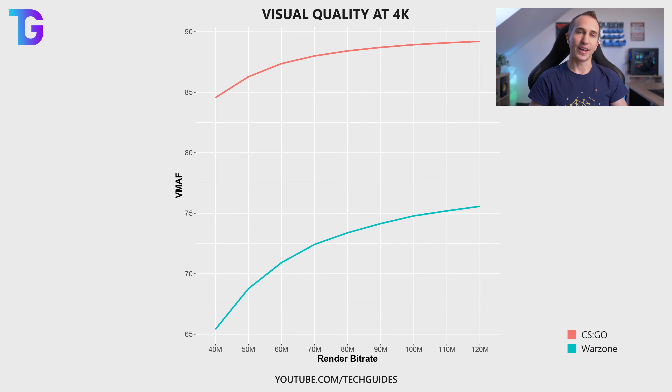From my testing I found that simply increasing the bitrate ever higher would always lead to a higher quality of the final YouTube video. Therefore the somewhat anticlimactic result was that the highest possible bitrate you can render at or still upload to YouTube would result in the highest possible video quality. Obviously this isn't a satisfying result as not everybody can upload humongous file sizes or has enough space on their local machine to store all their huge YouTube projects.